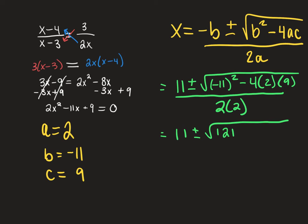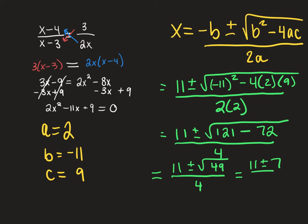So it's 121 minus 72. And then 121 minus 72 is 49. It's 49. What's the square root of 49? 7. I love when it's a perfect square root.